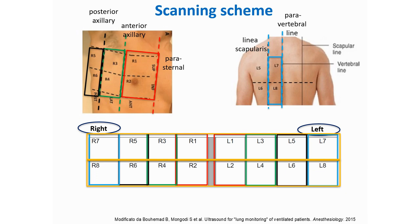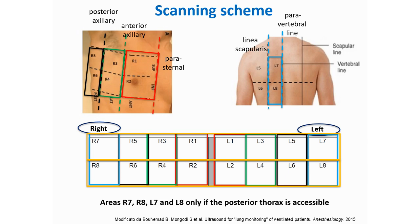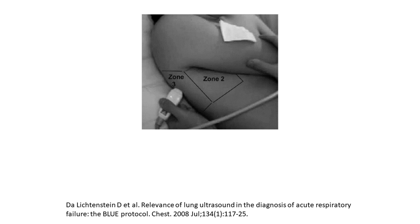If the posterior thorax is not accessible, the areas R7, R8, L7, and L8 will be discarded. Whenever possible, the posterior thorax should be evaluated because this is where the lesions are often present. If the patient cannot sit, the posterolateral chest is usually accessible by tilting the patient a bit on their side.